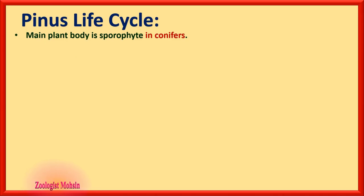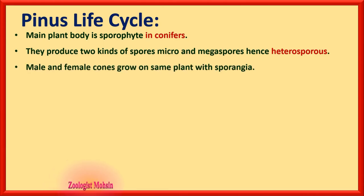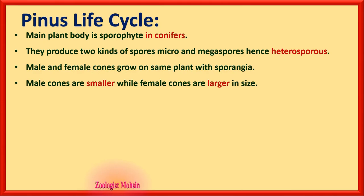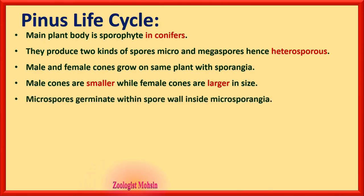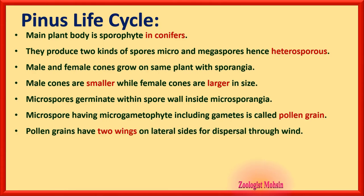Pinus life cycle: the main plant body is the sporophyte. In conifers — which are gymnosperms — they produce two kinds of spores, micro and mega spores; hence they are called heterosporous. Male and female cones grow on the same plant, both having sporangia. Male cones are smaller while female cones are larger. Microspores germinate within spore walls inside microsporangia — that fact is very important to remember. A microspore containing the microgametophyte including gametes is called a pollen grain of gymnosperms.